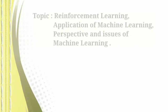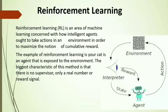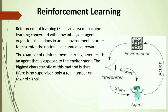Hello everyone. My name is Purva Komaspalewar from the ENTC department of BVCOEW. My topics are reinforcement learning, applications of machine learning, and perspectives and issues in machine learning. Reinforcement learning is an area of machine learning concerned with how intelligent agents take actions in an environment in order to maximize the notion of cumulative reward. Reinforcement learning is an art of optimal decision making — a system will perform some action and return some set of instructions, and based upon that action you will take the appropriate decision.